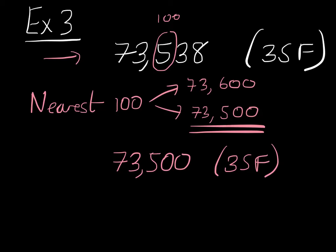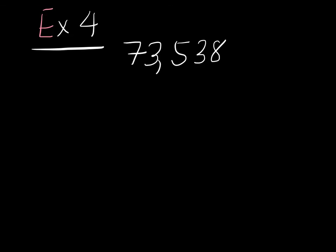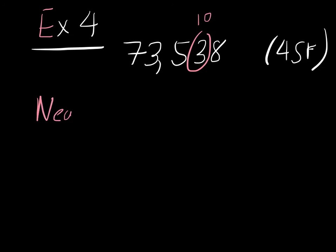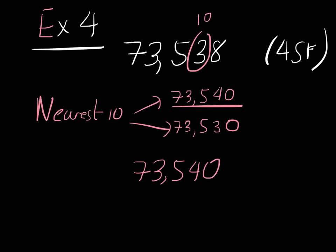Example 4: 73,538 to four significant figures. The fourth significant figure is the 3, which is in the tens column. So what's the nearest 10? Our options are 73,540 or 73,530. And 38 is closer to 40 than to 30. So our final answer is 73,540 to four significant figures.